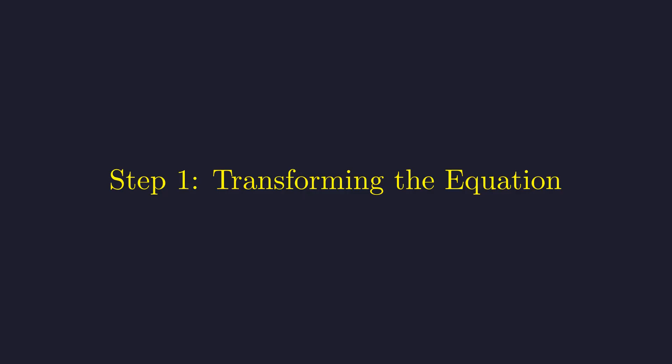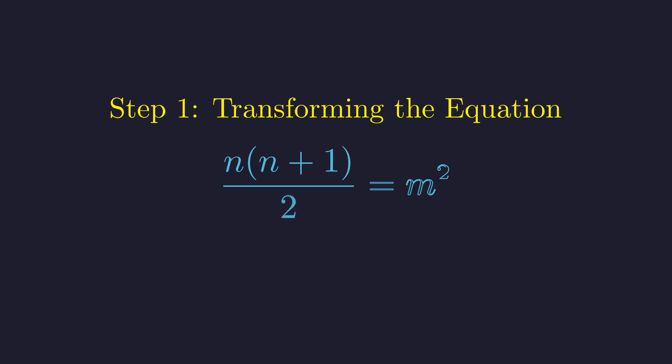First, we need to rearrange this equation into a more structured form. Our goal is to eliminate the fraction and see if a recognizable pattern emerges. We begin with the original equation. To clear the denominator, we will multiply both sides by 2. This gives us n times the quantity n plus 1 equals 2 times m squared.